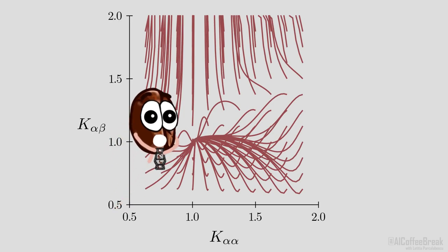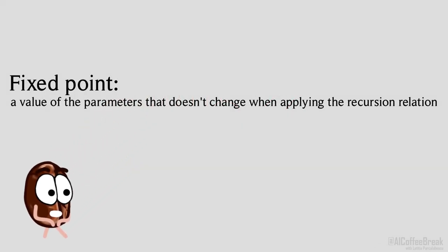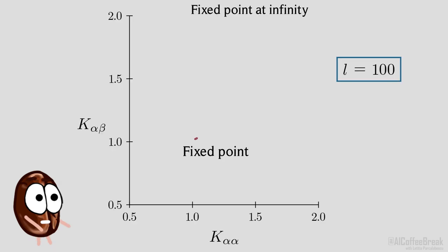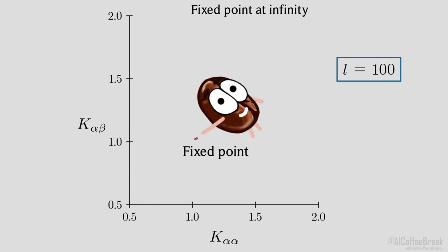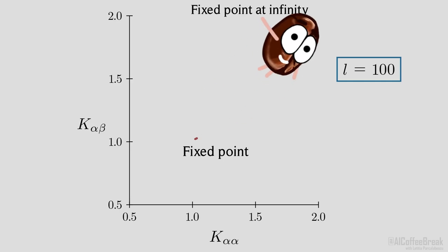One thing we immediately notice is that the values that start in the bottom half all converge to a single point, whereas the top ones drift off to infinity. This is called a fixed point, which is defined as a point in parameter space that when you apply renormalization, you end up at the same point again. We treat infinity also as a point, so we can say that all parameters in this graph converge to a fixed point, which is about 1 for the parameters starting in the bottom half and infinity for the ones starting in the top half.